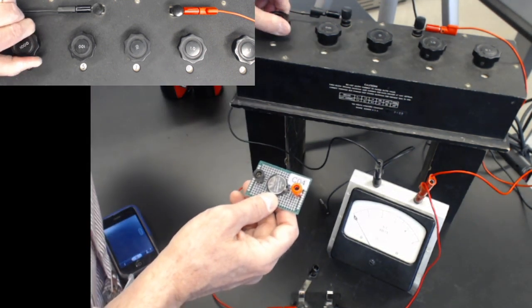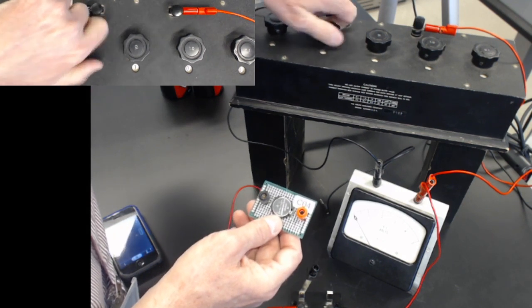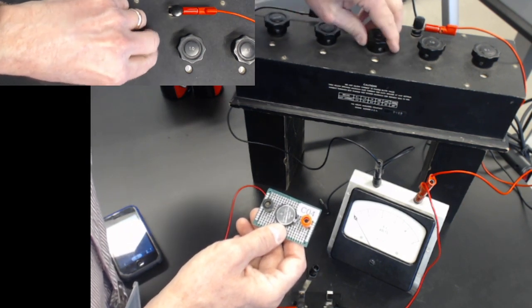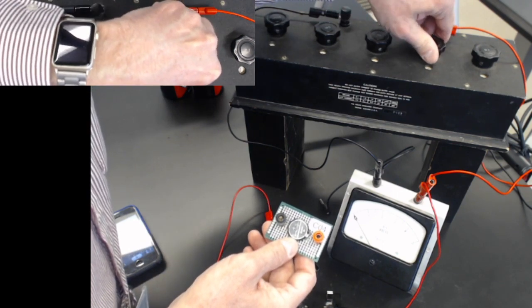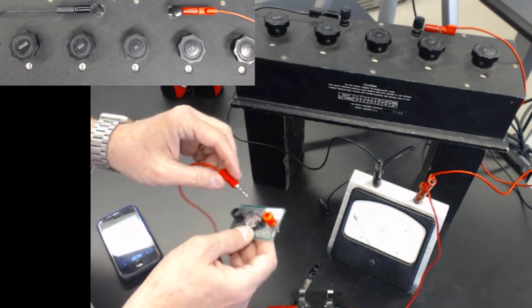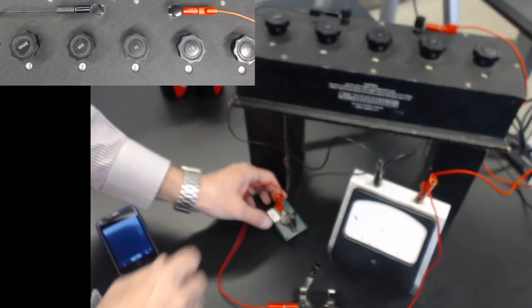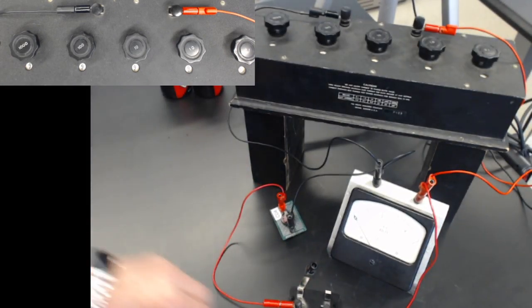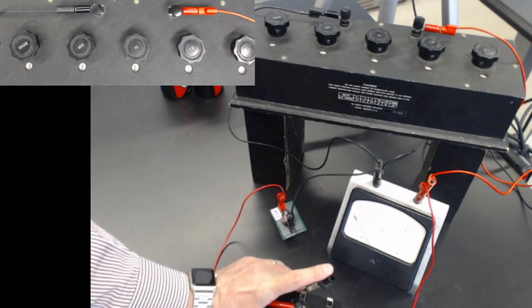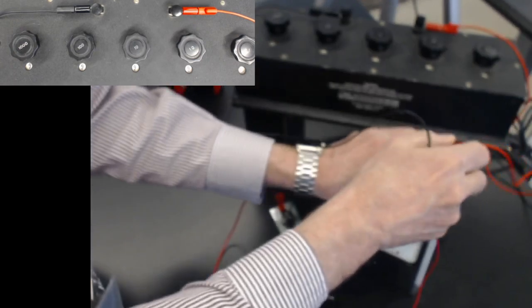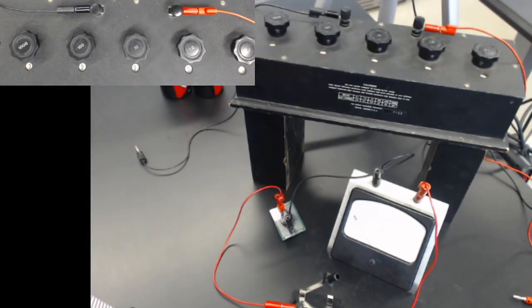Let me set the decade box up to the highest again, 9,999. And we'll plug this into the circuit. And the first thing I'll do is just connect. Actually, let me disconnect the decade box, because we want V0 without any resistance at all.